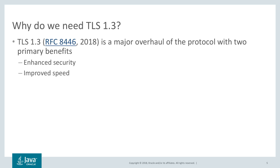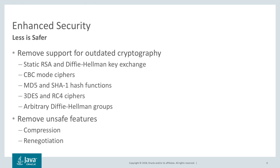Let's take a look at each of those improvements in a bit more detail. Enhanced security — less is safer. TLS 1.3 removes support for outdated cryptography, which improves security and makes it less likely a session can be broken because of an insecure cipher suite or weak cryptography. The removal of outdated cryptography includes static RSA and Diffie-Hellman key exchange, CBC mode ciphers, MD5 and SHA-1 hash functions, triple DES and RC4 ciphers, and arbitrary Diffie-Hellman groups. TLS 1.3 also removes unsafe features such as compression and renegotiation. This is not a complete list — you should see the RFC and other online literature for other features that have been removed or simplified.